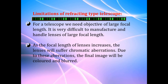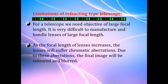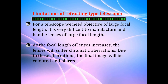Because of chromatic aberration, the final image will be either colored or blurred, so you will not get a clear image. Because of these limitations, we prefer reflecting type of telescopes.